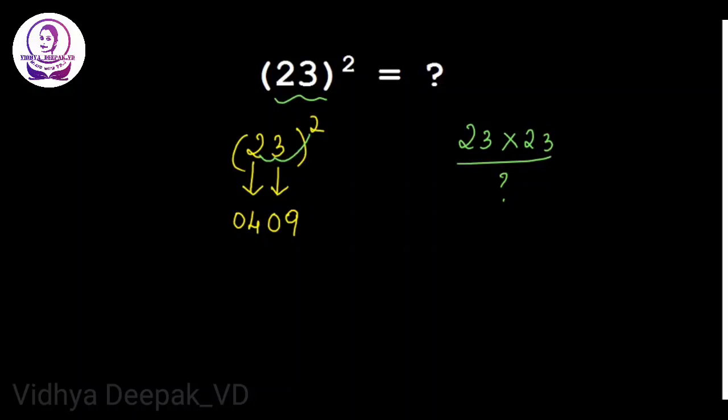You have to write that 12 leaving one number from your right inside, so we have to write 12 here. Now add this number. What do you get? 9, 0 plus 2 is 2, 4 plus 1 is 5. So your required 23 square is nothing but 529.